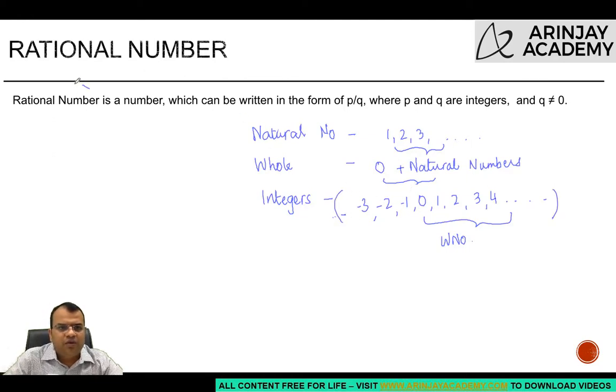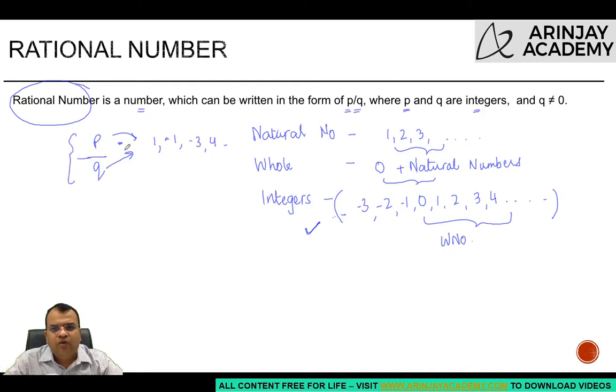Now what is a rational number? Rational number is a number which can be written in the form of p upon q. You can write any rational number in the form p upon q, where p and q are integers. The value of p will come from this set. It can be 1, minus 1, minus 3, 4, anything. Similarly q can also be any integer. But when is it a rational number? When it is in the form p upon q and q is not equal to 0.